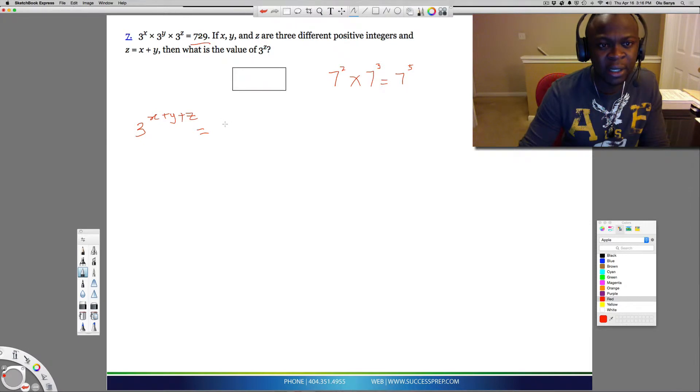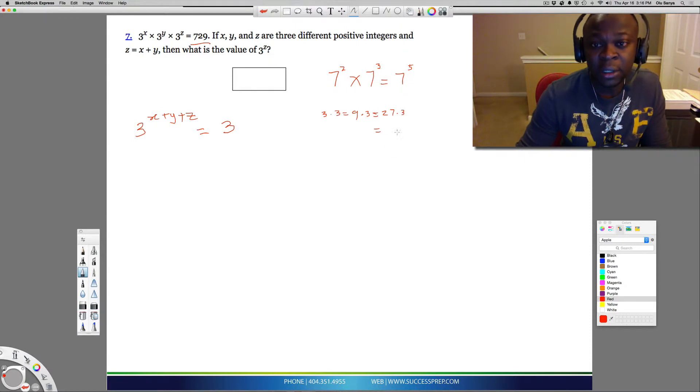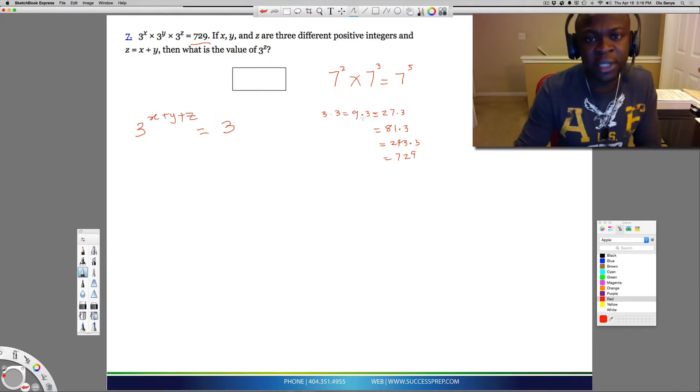Now for the 729 part, that really needs to become 3 to the something. So let's think about what that something needs to be. If you look at 729, what you need to do using your calculator on the GRE, because on the GRE they do allow you to have a calculator. Using a calculator on GRE, you just need to multiply. So you need to say 3 times 3, which is 9. And then that 9 times 3 gives you 27. And that 27 times 3 gives you 81. And that 81 times 3 gives you 243. And then that 243 times 3 gives you 729. Now you'll be doing that on the calculator they give you on the GRE test.